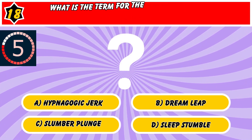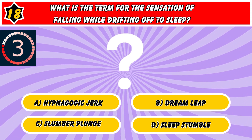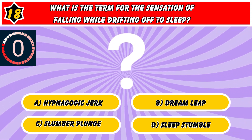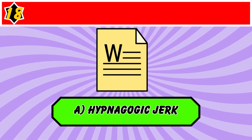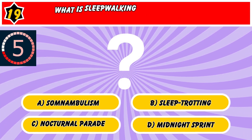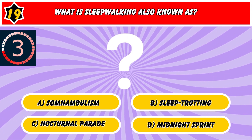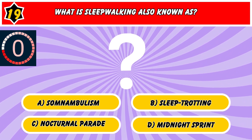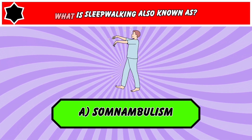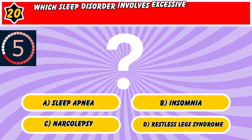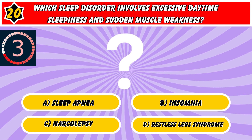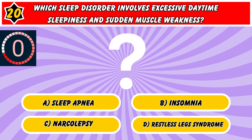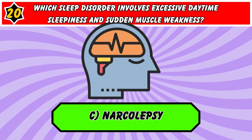What is the term for the sensation of falling while drifting off to sleep? Hypnagogic jerk. What is sleepwalking also known as? Somnambulism. Which sleep disorder involves excessive daytime sleepiness and sudden muscle weakness? Narcolepsy.